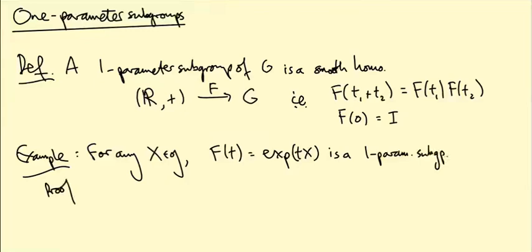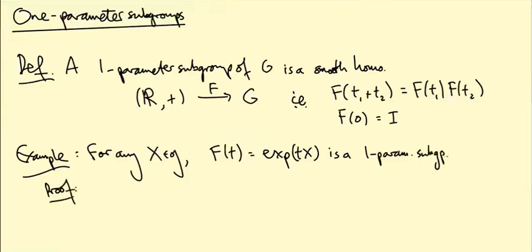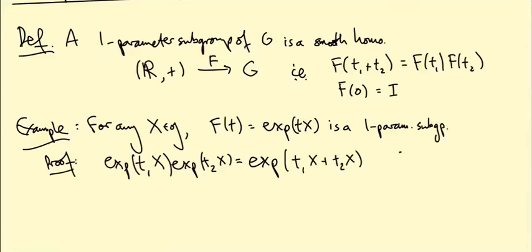Proof: well, exp(T1X) times exp(T2X) equals, well, if you remember the properties of the exponential map, if two matrices commute with one another, then we have the usual law of logarithms, so this should be exp((T1 + T2)X) because T1X and T2X commute with one another.